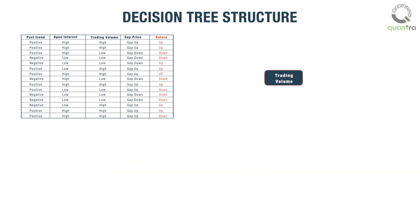In this example, trading volume is the root node which gets selected from all available predictors based on a criterion like Gini index or information gain. When trading volume is high, the dataset before the split takes place would look as shown here.